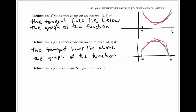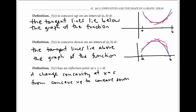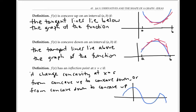f of x has an inflection point at x equals c if it changes concavity at c — in other words, it goes from concave up to concave down, or from concave down to concave up. In this graph, the function has two inflection points: one about here, where the function changes from concave down to concave up, and one at the cusp right here, where it changes from concave up to concave down.